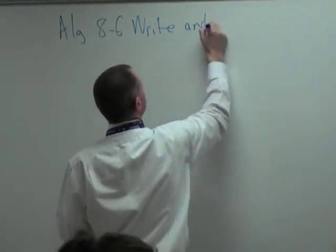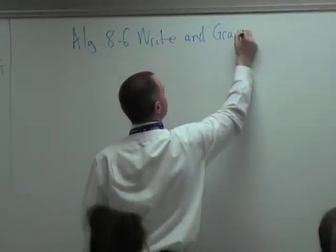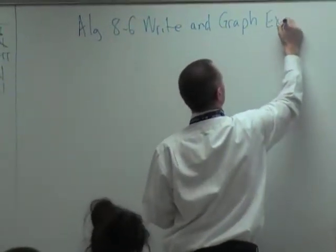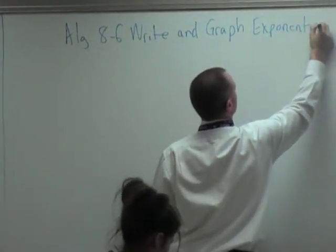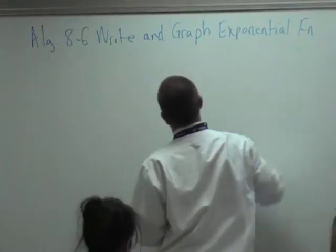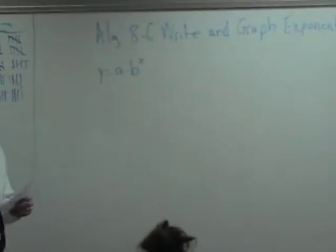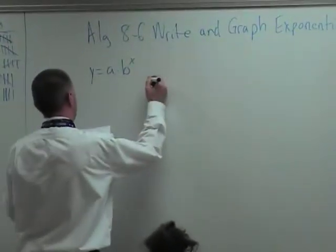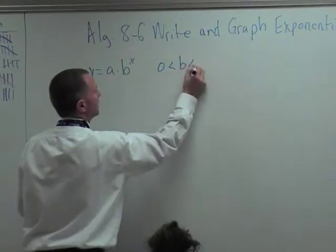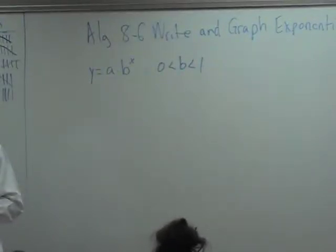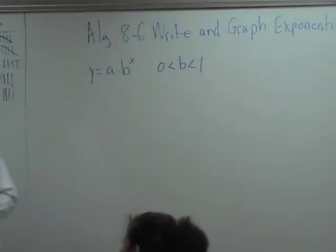Write and graph exponential functions. So now we have our y equals a times b to the x, which is what we have for our growth, except b is between 0 and 1. So if b is a fraction between 0 and 1, then your values will decrease. They will get smaller and smaller and closer and closer to 0.